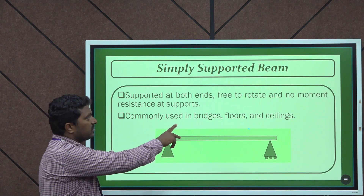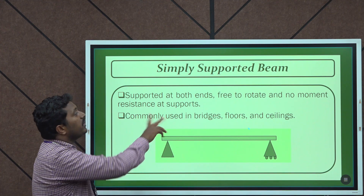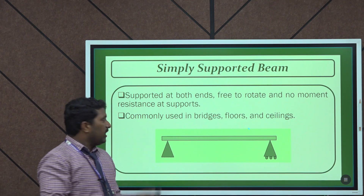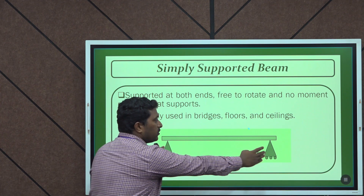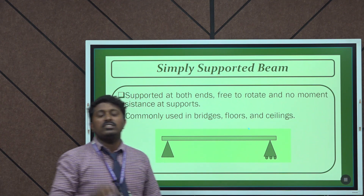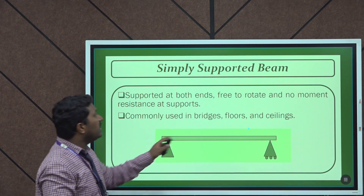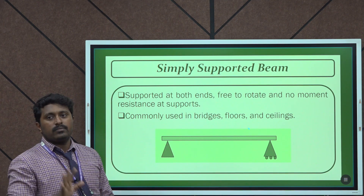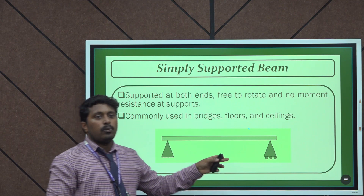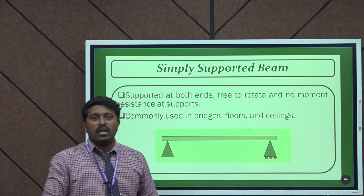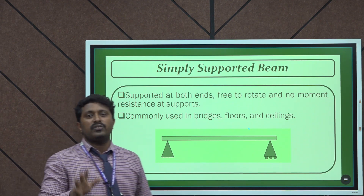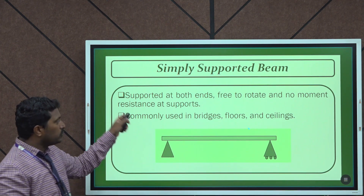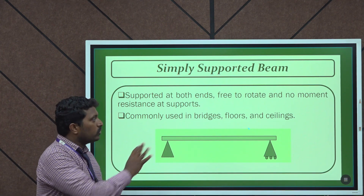A simply supported beam is supported at both ends. The beam is free to rotate, and there is no moment resistance at the supports. They have two supports at both ends, and those supports do not resist the beam's rotation or movement — they only provide vertical support. That is why they are called simply supported beams. These beams are commonly used in bridges, floors, and ceilings.